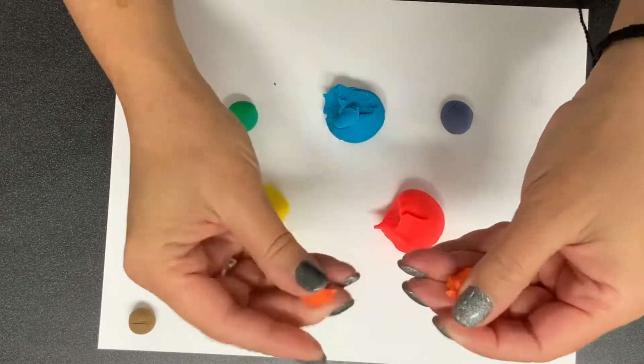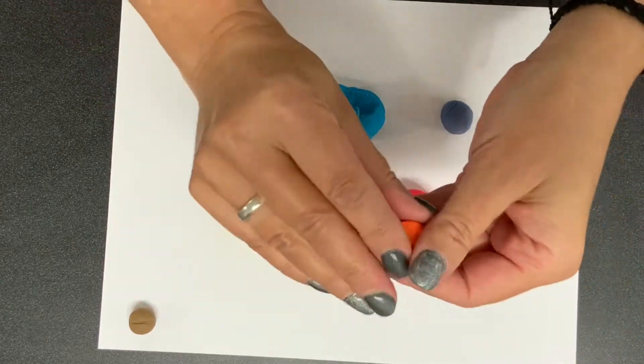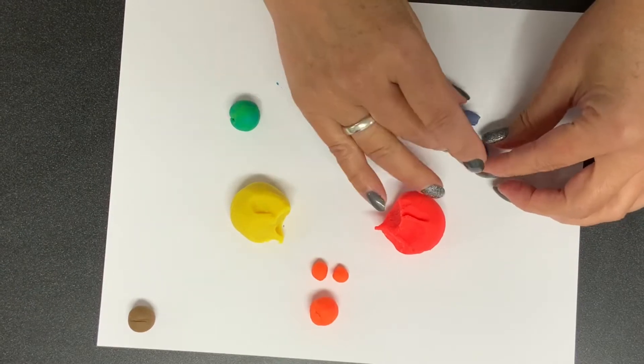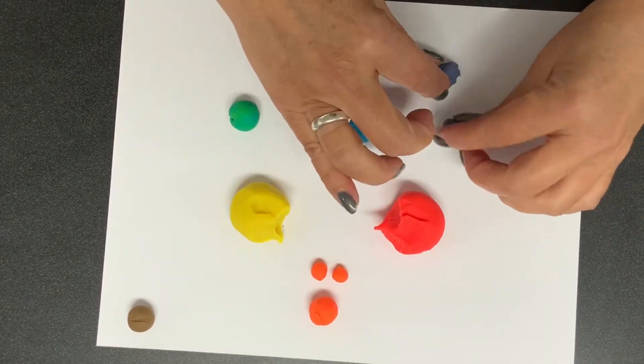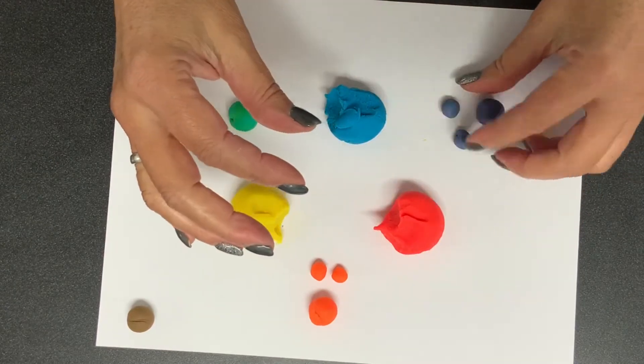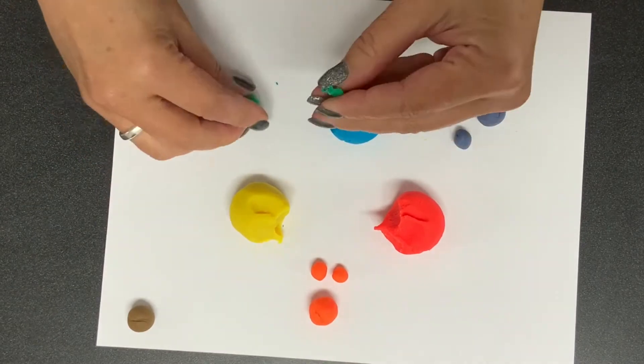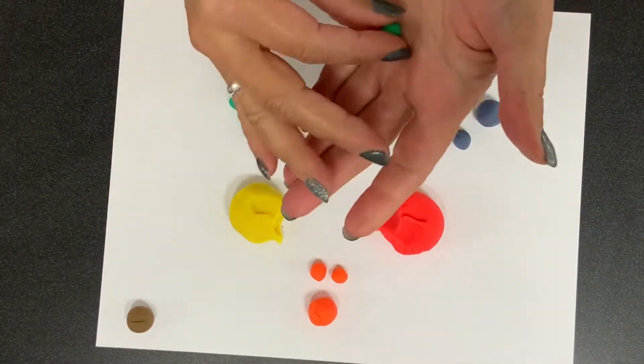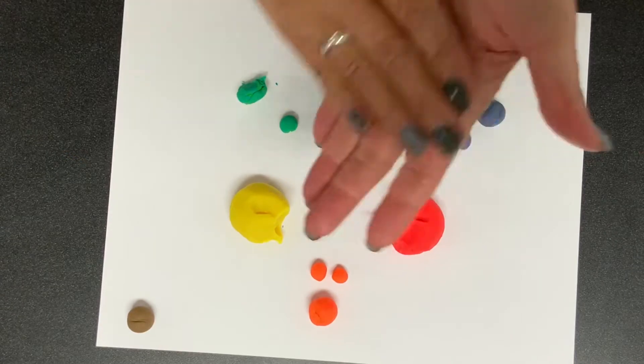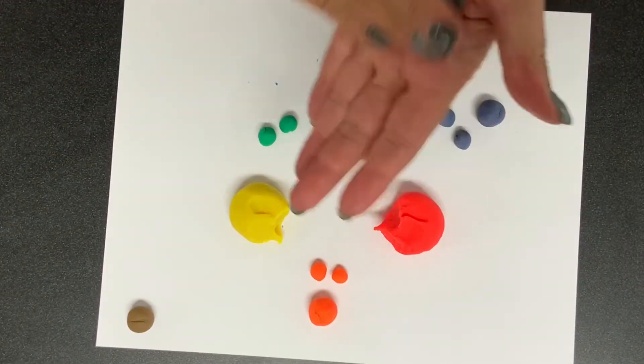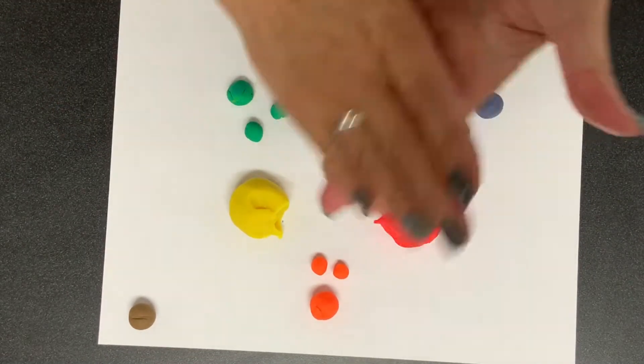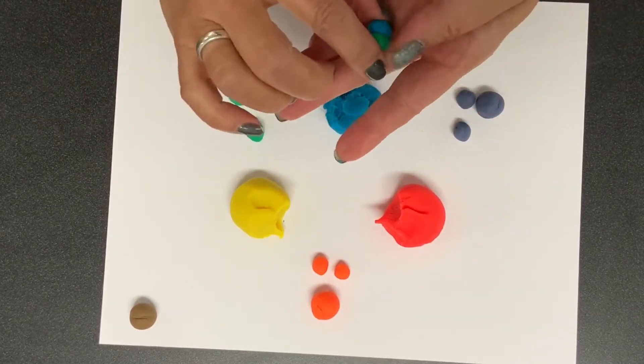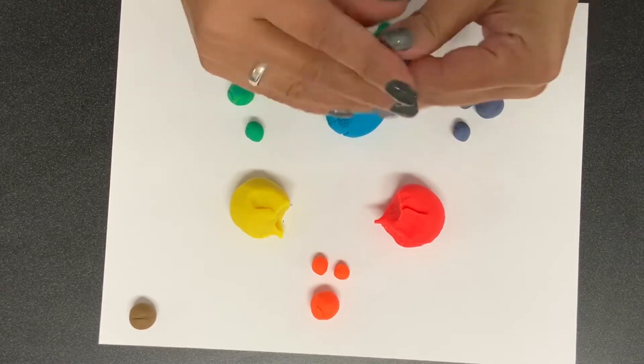Now you're going to take a pea-sized amount of each secondary color, two pea-sized amounts, making sure that they all equal in size. Once you have those all rolled out, then you're gonna take the same amount from your primary color and then you're going to take one of your secondary colors and you're gonna mix those together.